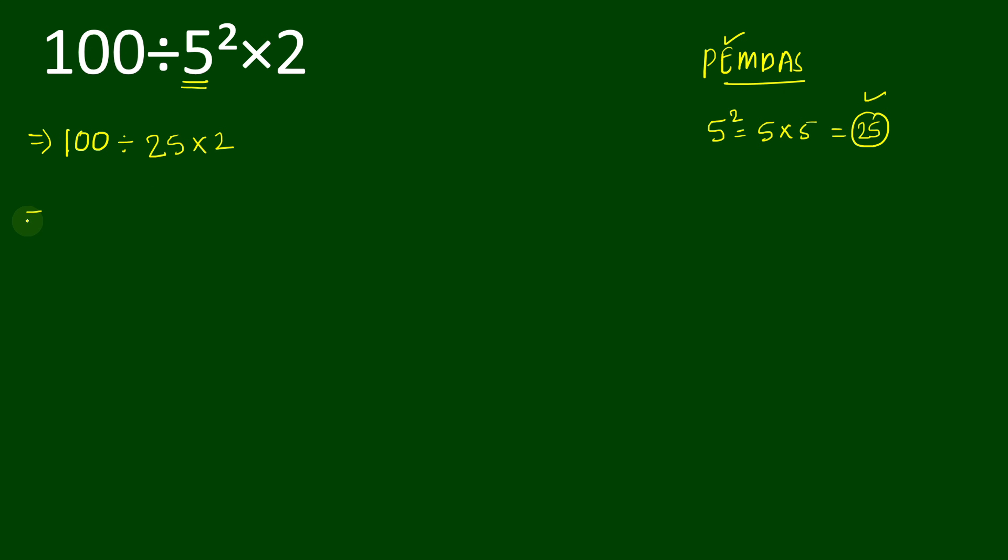Now many are solving in a way like 100 divided by... and they operate the multiplication first because according to PEMDAS we can see multiplication comes first. So they are solving in a way, actually, but this is not the right way. 25 times 2, which equals 50, and 100 divided by 50 will give result 2. Do you think this is the right way? Nah, this is not the right way.